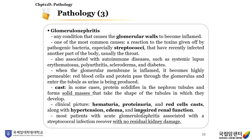When the glomerular membrane is inflamed, it becomes highly permeable. Red blood cells and protein pass through the glomerulus and enter the tubule as urine is being produced. In some cases, protein solidifies in the nephron tubules and forms solid masses that take the shape of the tubules in which they develop. The clinical picture of glomerulonephritis includes hematuria, proteinuria, and red cell casts, along with hypertension, edema, and impaired renal function. Most patients with acute glomerulonephritis associated with streptococcal infection recover with no residual kidney damage.